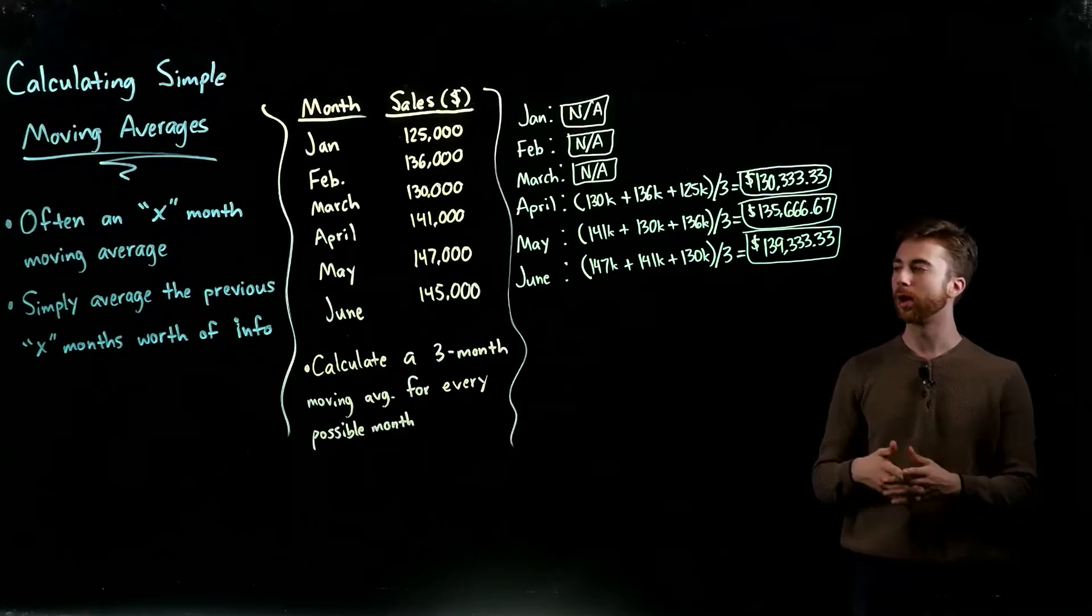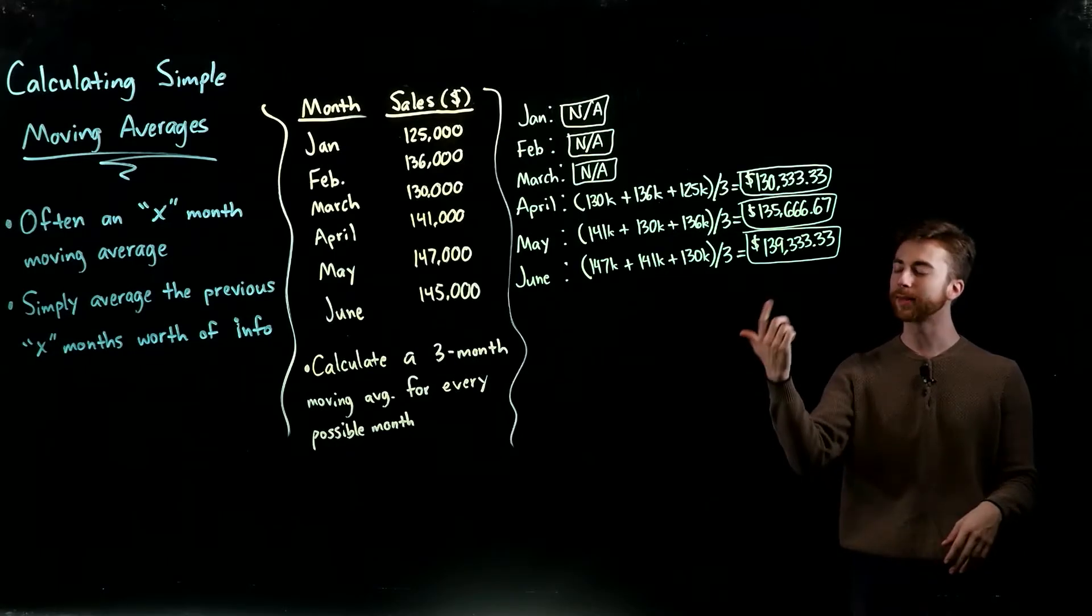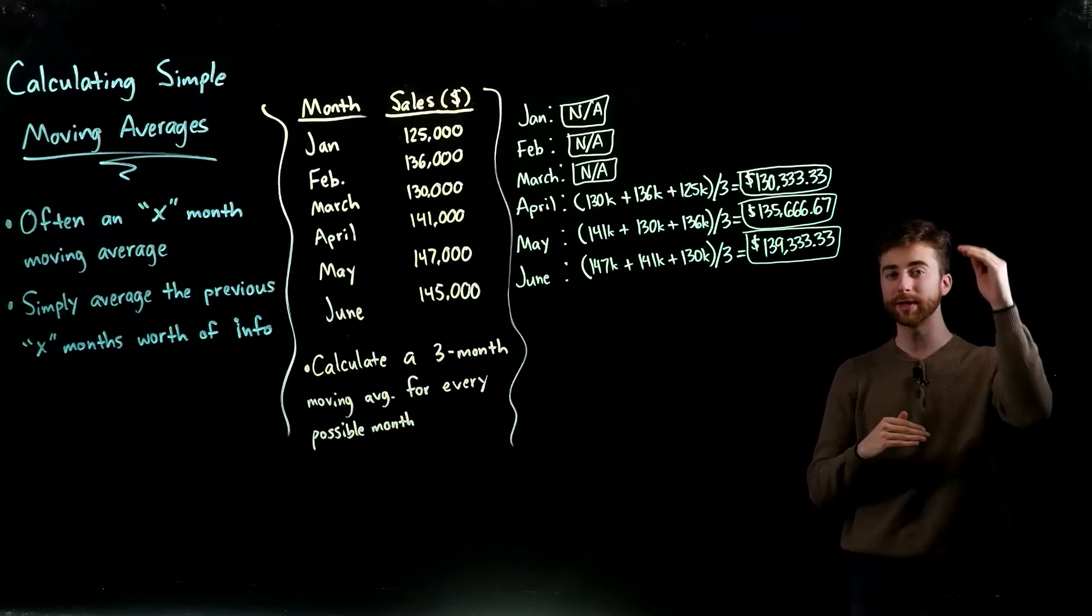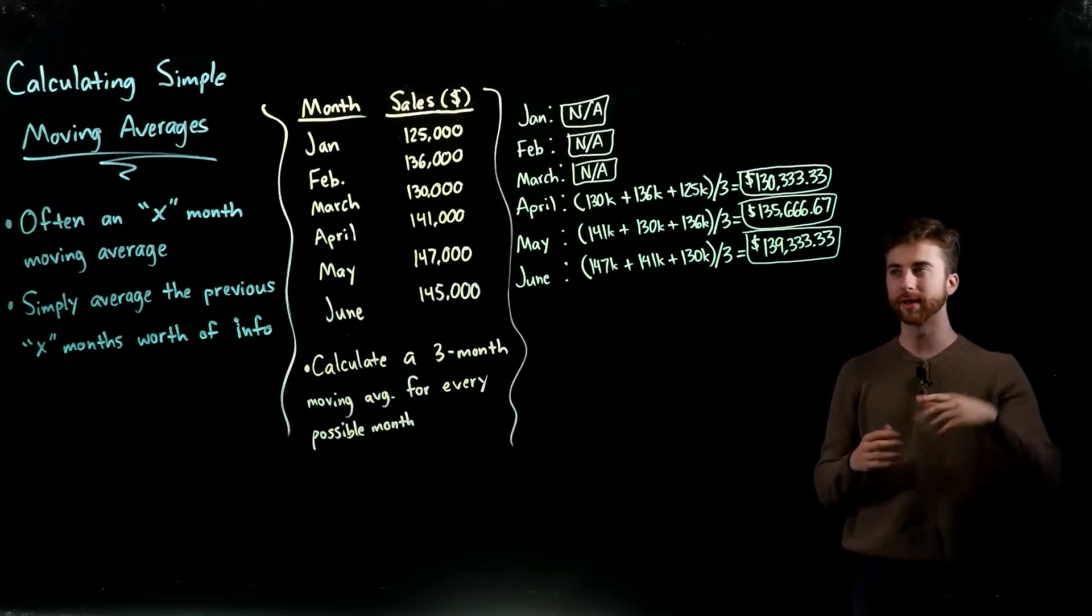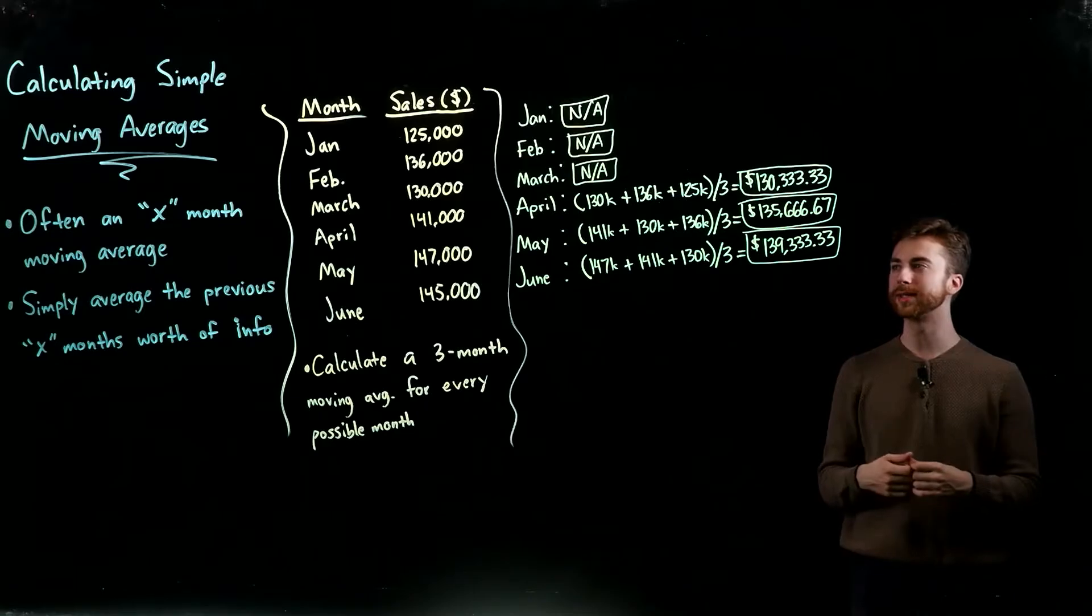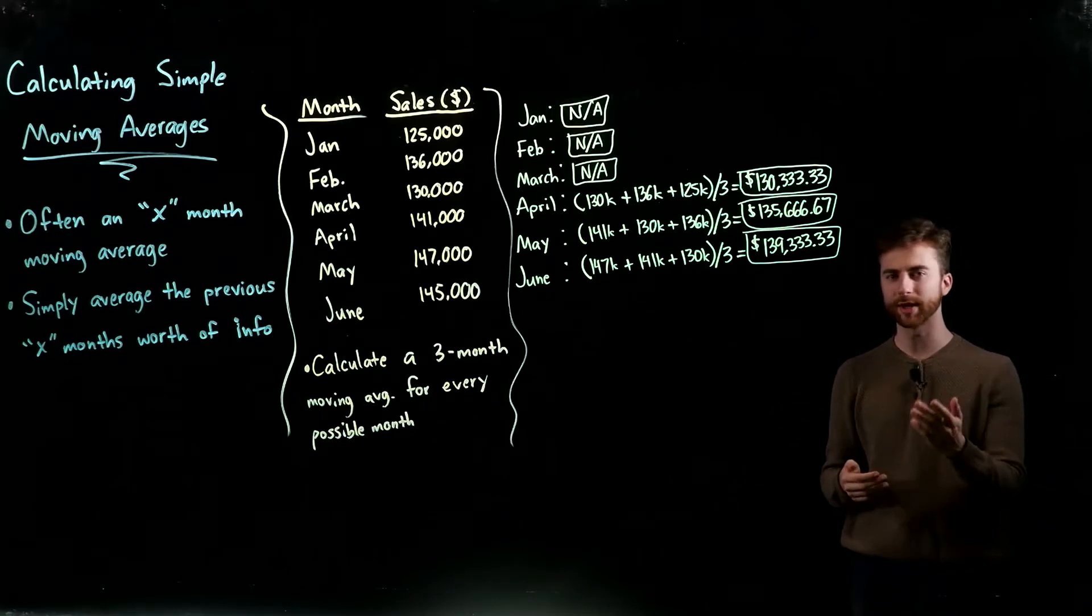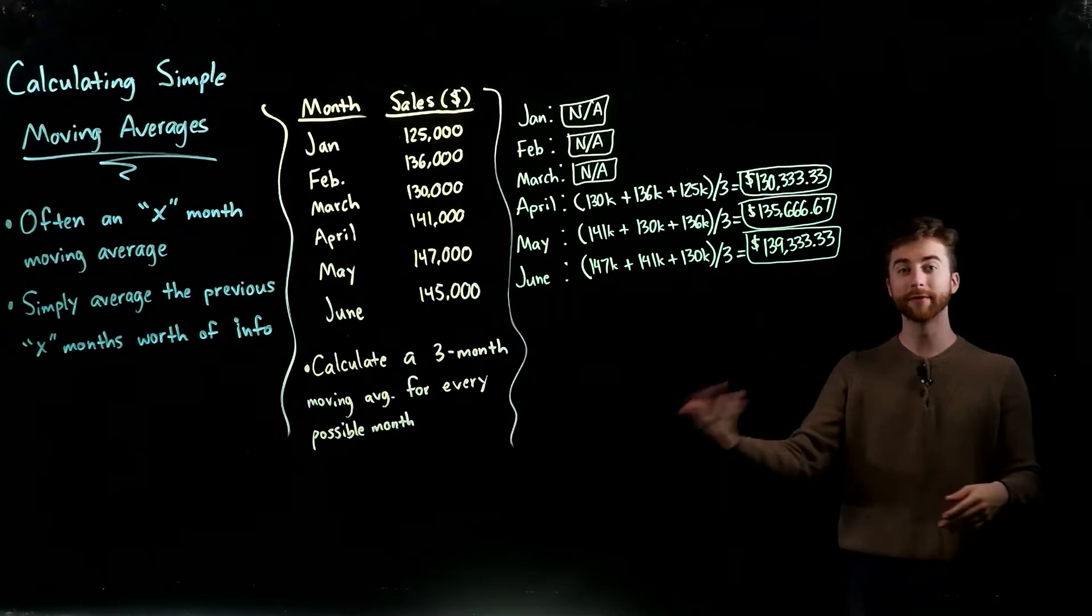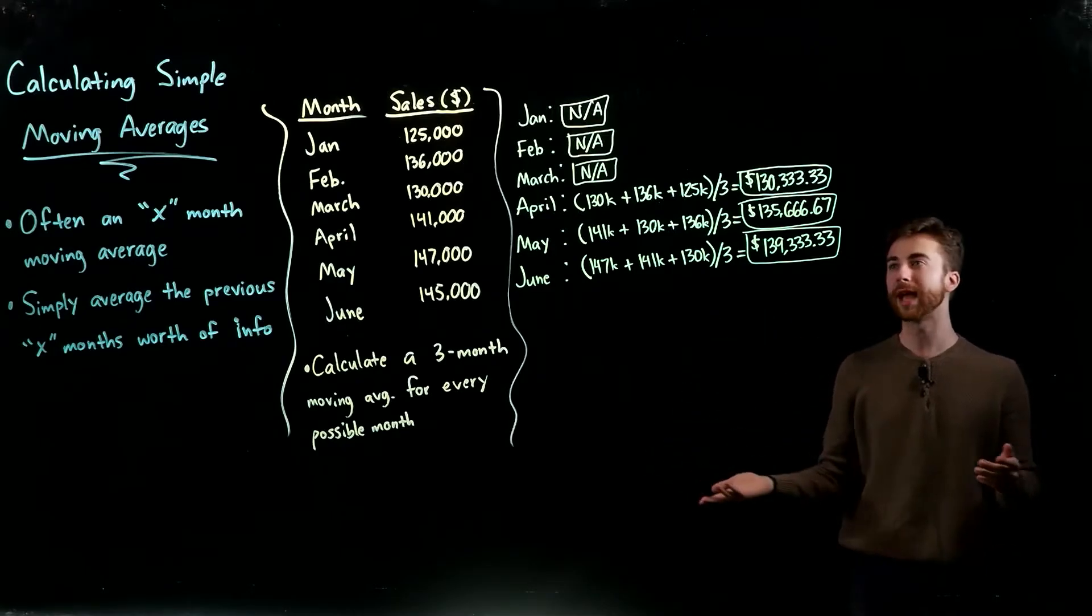Based on the definition, we're just averaging the previous X months worth of info. So if I'm calculating a three-month moving average, I'm going to look at the previous three months and average all three of them. For January, you can see we don't have the previous three months worth of information—we don't have December, November, or October of the previous year. So we can't do a moving average based on the information we have.